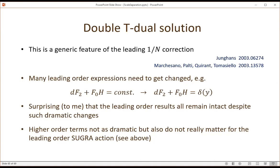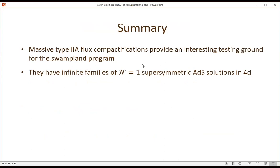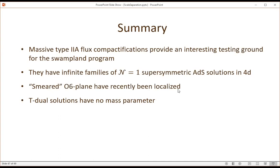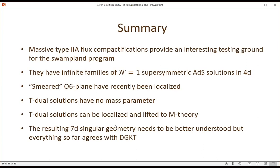In summary: DGKT is very interesting — supersymmetric, as controlled as one can hope for while being non-trivial — but has shortcomings like smeared O6-planes and a non-Calabi-Yau issue. The T-dual solutions have no mass parameter, can be unsmeared and localized, and can be lifted to M-theory. M-theory has a singularity in the 7d geometry not fully understood yet, but in principle this provides another angle of attack that wasn't present in the type IIA setting. Thank you very much.